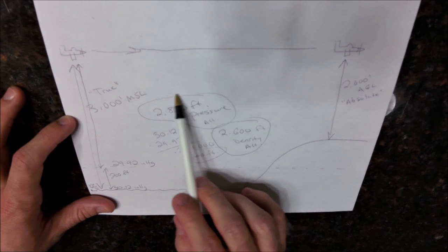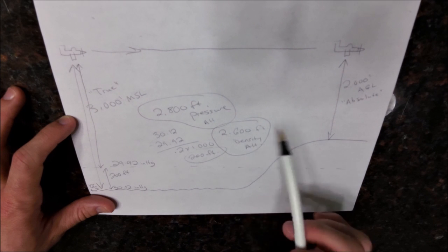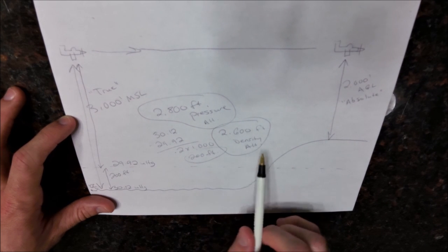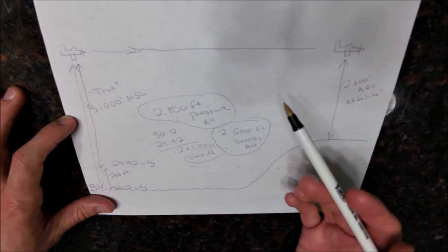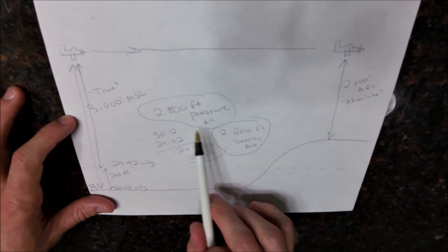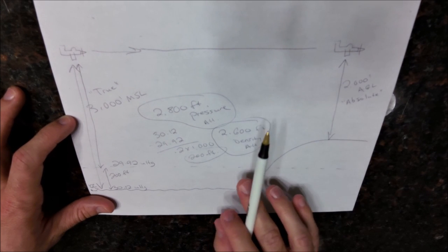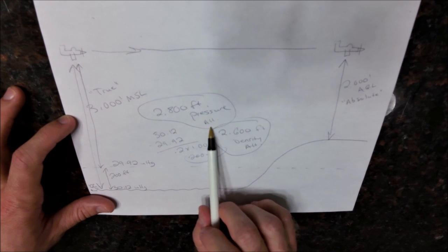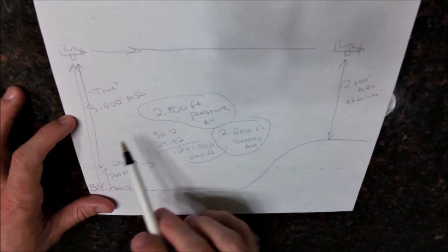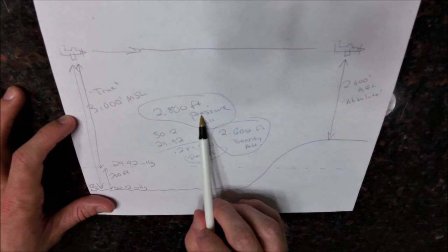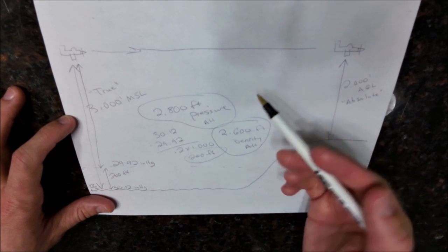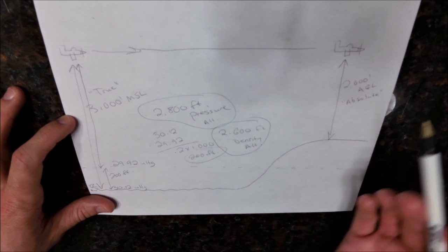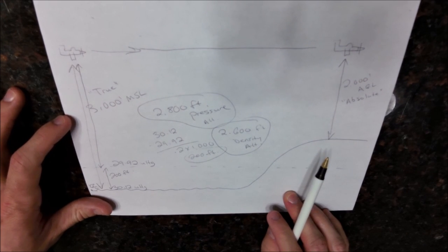Pressure altitude is really a stepping stone that gets us to density altitude, which we use for performance calculations: takeoff and landing distance, climb performance, cruise performance, fuel burn, and so on. All performance charts in the airplane are based on density altitude. In fact, in Section 5 — Performance — of any Pilot's Operating Handbook, one of the first things a performance chart has you do is plug in your pressure altitude and then asks for outside air temperature. What the chart is doing is taking your pressure altitude and correcting it for non-standard temperature, effectively giving you density altitude to carry forward for your performance calculations.